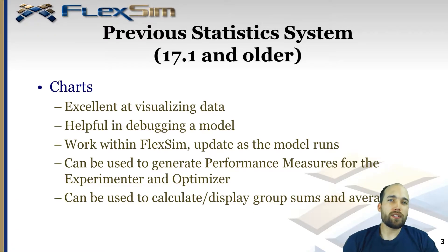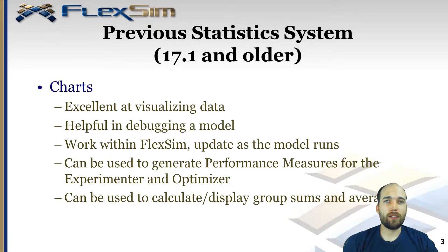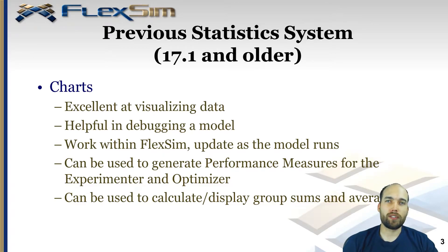Our previous statistics system in version 2017 update 1 and previous had dashboard charts. Charts are great — they are excellent at visualizing data, very helpful when you're debugging a model. They work within FlexSim and update as the model runs so you get a live view of how your system is behaving. They're handy for generating performance measures or other system metrics for the experimenter and optimizer. They can also calculate aggregate data like sums and averages for a set of objects, particularly in groups.